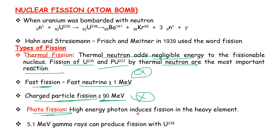Charged particle fission and photo fission involve high-energy photons that induce fission in heavy elements. Photo fission uses high-energy photons of 5.1 MeV. Gamma rays at 5.1 MeV can produce fission with Uranium-238. This is very important.